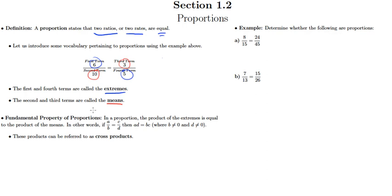Okay, so let's try that with our example of six tenths equals three fifths. Well, we're going to multiply six times five. And we want to know, is that equal to 10 times three? Well, of course it is because both of those products equal 30.